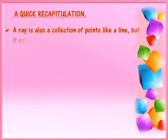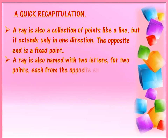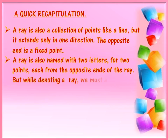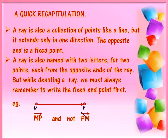A ray is also a collection of points like a line, but it extends only in one direction. The starting end of a ray is a fixed point. Like a line, a ray is also named with two letters for two points each from the opposite ends of the ray. But while denoting a ray, we must always remember to write the fixed end point first. For example, if we draw a ray that begins from point M and extends up to point P, then we will name it ray MP with the symbol, and not PM, because the ray does not begin from P — it begins from M.